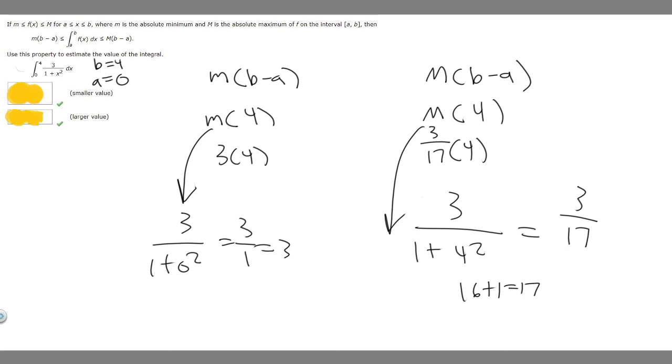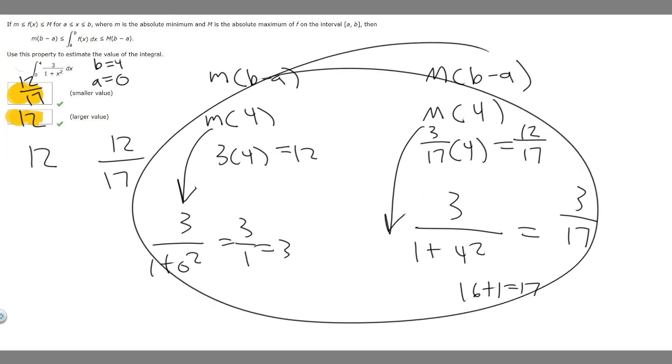And so now we can just calculate. So 3 times 4 is going to be 12. So one of our values is going to be 12. And the other one is going to be 3 times 4 is 12 over 17. So one of our values is 12. One of them is 12 over 17. So we put the smaller value here. So this one is going to be 12 over 17. Our larger value is going to be 12. And so these right here are going to be our answers. And this is going to be how you solve this problem.